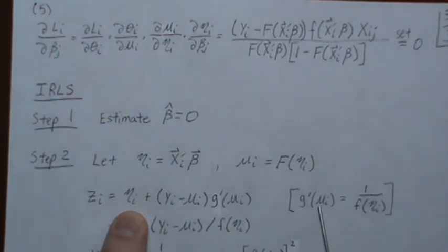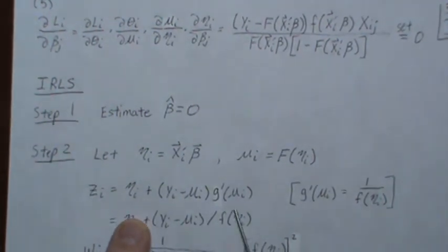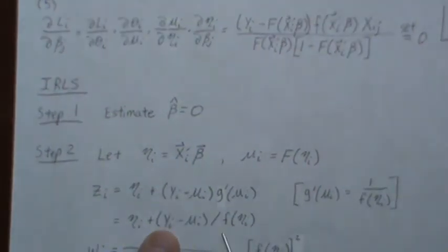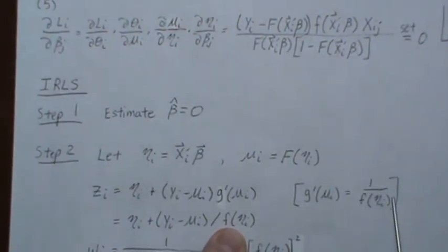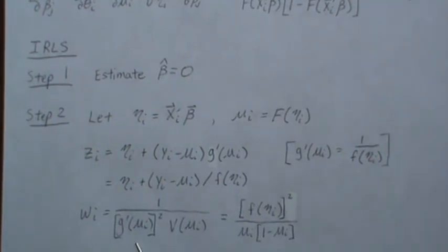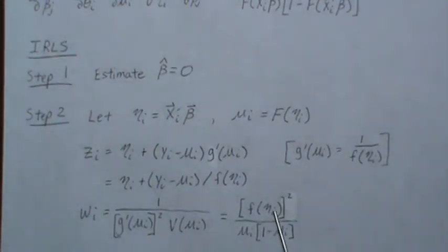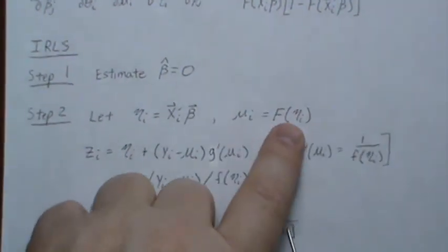The derivative of our link function was one over the density. So you plug in this for that and you get this value. Remember, that's our linear combination, that's our data, that's our mean, and that's the density evaluated at it. Now the weight w_i is one over the square of the derivative of our link function times the variance. Here usually there's a dispersion parameter, but for binomial it's not there, so it's just one. And this derivative was one over the density, so that becomes density squared. And that's our variance function, mu_i times one minus mu_i, where mu_i is this.